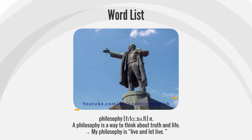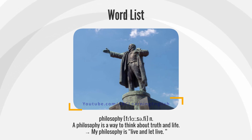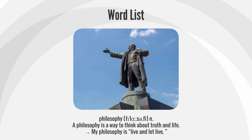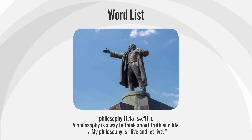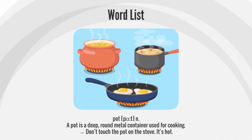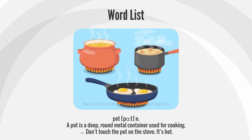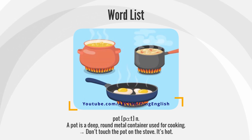Philosophy — a philosophy is a way to think about truth and life. Example: My philosophy is live and let live. Pot — a pot is a deep round metal container used for cooking. Example: Don't touch the pot on the stove — it's hot.